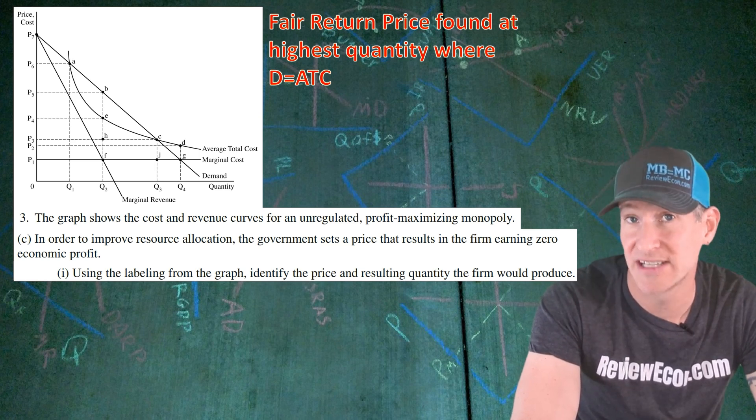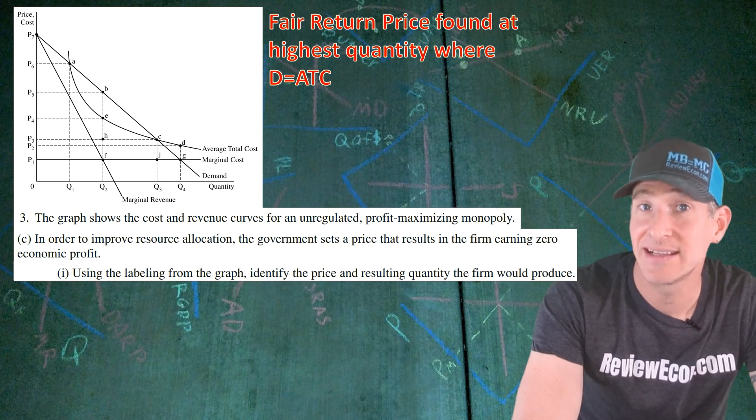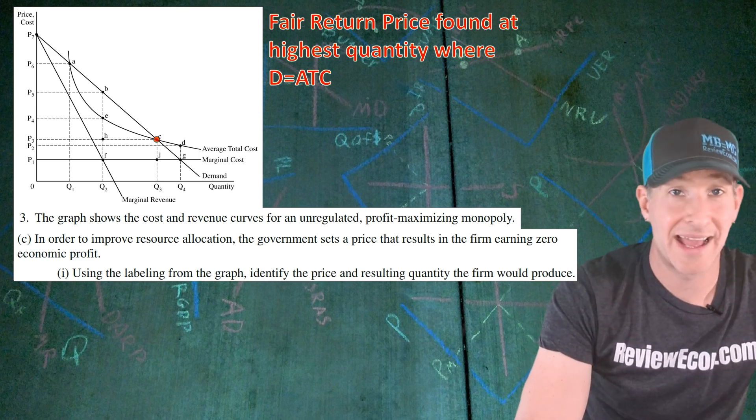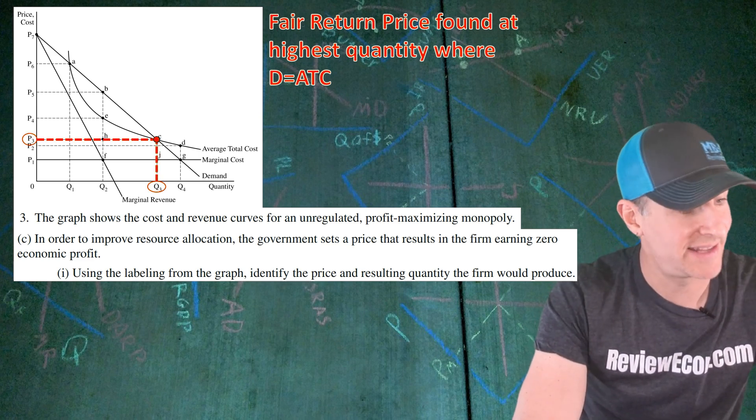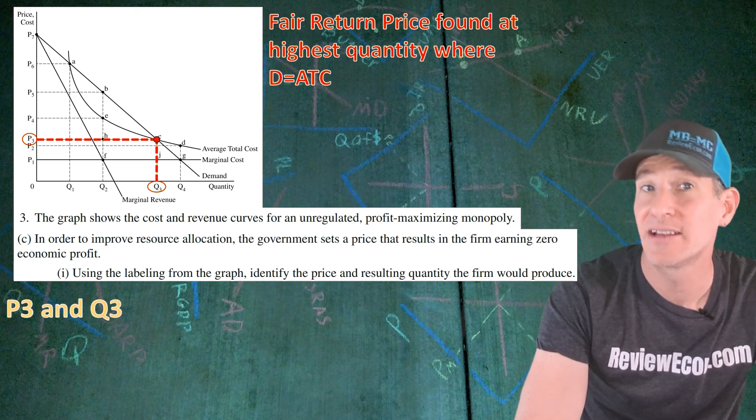Now this regulation where the firm equals zero economic profit is called a fair return price. It's going to decrease but not eliminate deadweight loss. You find that fair return price at the highest quantity where the demand equals the average total cost. We see that at point C, and at point C the price is P3 and the quantity is Q3. If you identify those correctly, you get your next point.